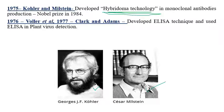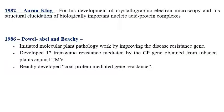Voller in 1976 and Clark and Adams in 1977 developed the ELISA technique — Enzyme-Linked Immunosorbent Assay — used for the detection of plant viruses. It is the most sensitive technique for detecting plant viruses, with a sensitivity range of 1 to 10 nanograms per milliliter.